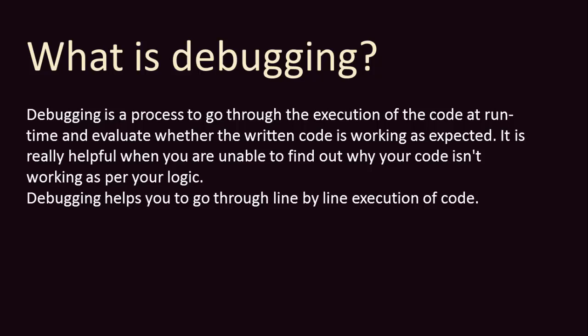First of all, what exactly is debugging? Debugging is a process in which we go through the execution of the code at runtime and evaluate whether the written code is working as expected or not. By using this process we can judge out what is the problem area and what is not going right.